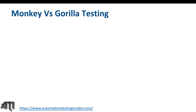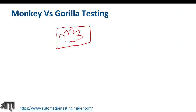Let's get started with today's topic. We are going to discuss monkey testing and gorilla testing. Monkey testing is a random testing — there is no plan and there are no test cases to execute. We can easily relate it to a monkey, that's why it's called monkey testing. The basic nature of a monkey is that it jumps from one branch to another branch in a tree. Similarly, as part of monkey testing we perform random testing on any system.